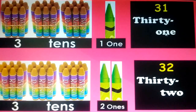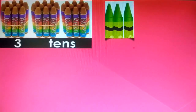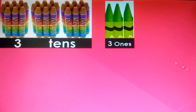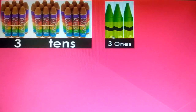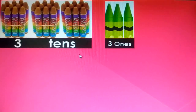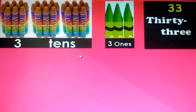T-H-I-R-T-Y, 30. T-W-O, 2, thirty-two. 1 ten, 2 tens, 3 tens, and 1, 2, 3 ones — which are loose, meaning they are not bundled. A bundle is not made because it needs 10 things; since we have 3 ones, which is less than 10, there is no bundle. So 3 tens and 3 ones is equal to 33.